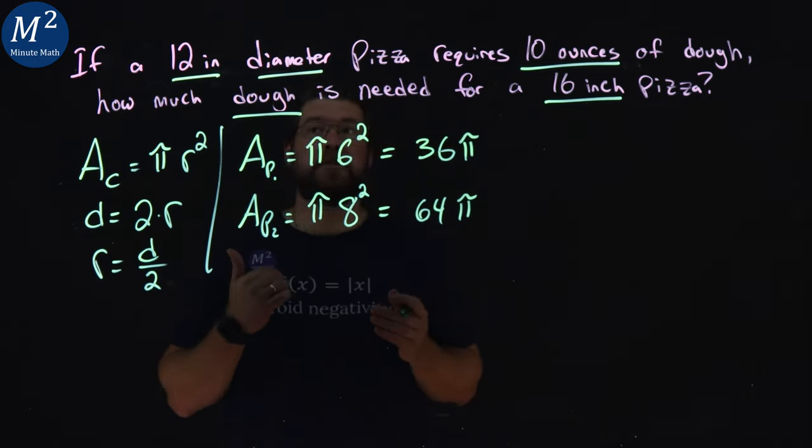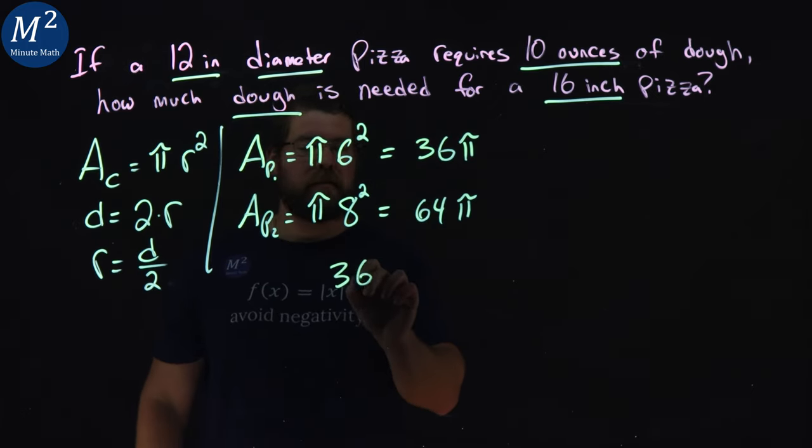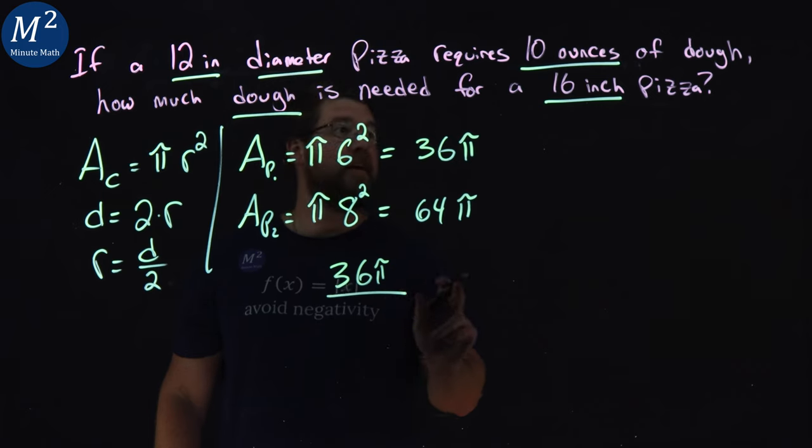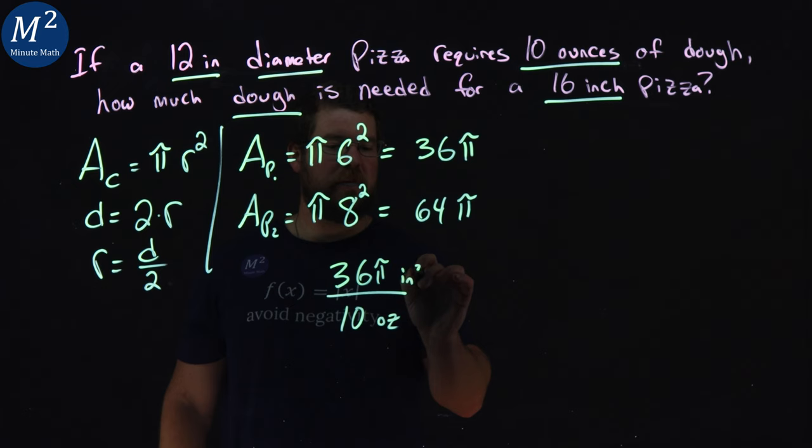So, let's set up a proportion. Now, our area of our first pizza, 36 pi, that area, gives us 10 ounces of dough.